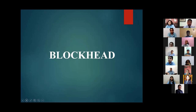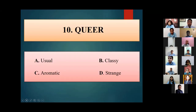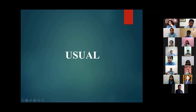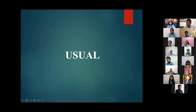Next word for Tanishka Chaudhary: 'Queer'. She answers 'B, classy' — incorrect. The correct answer is usual. Queer means strange or unusual, so the opposite is usual.